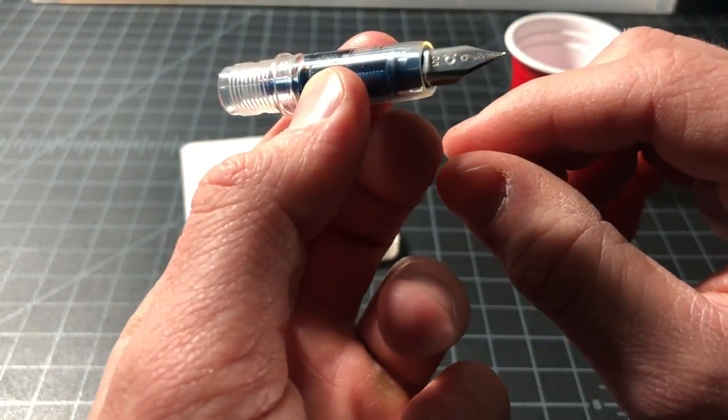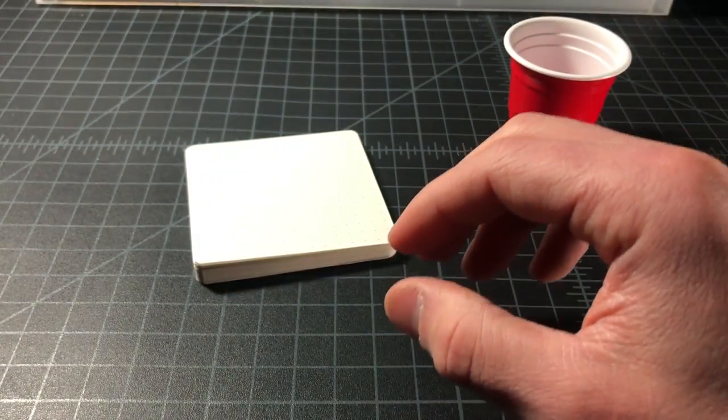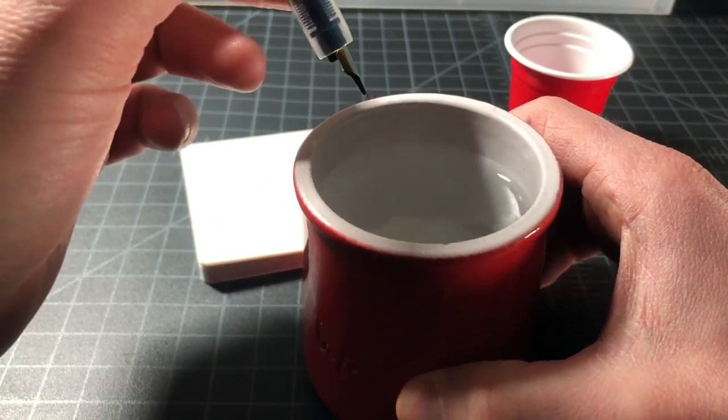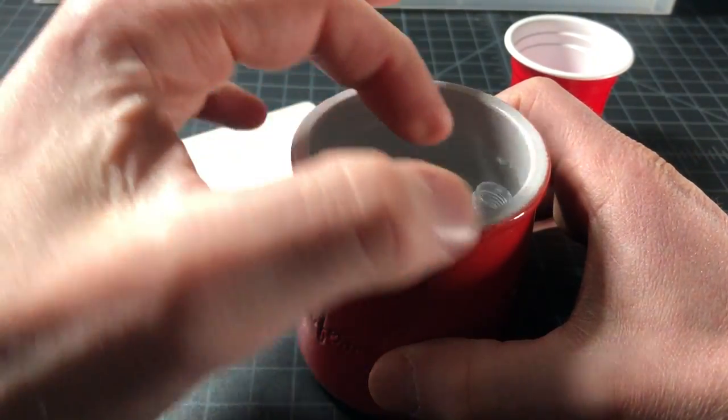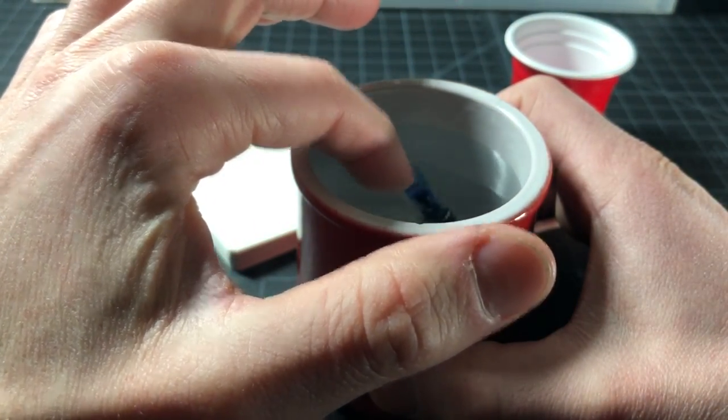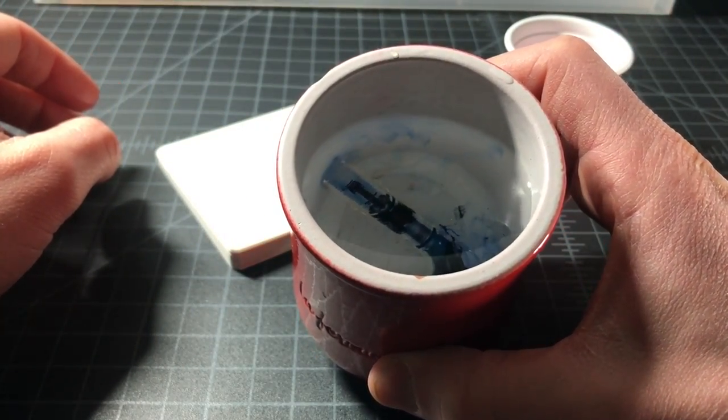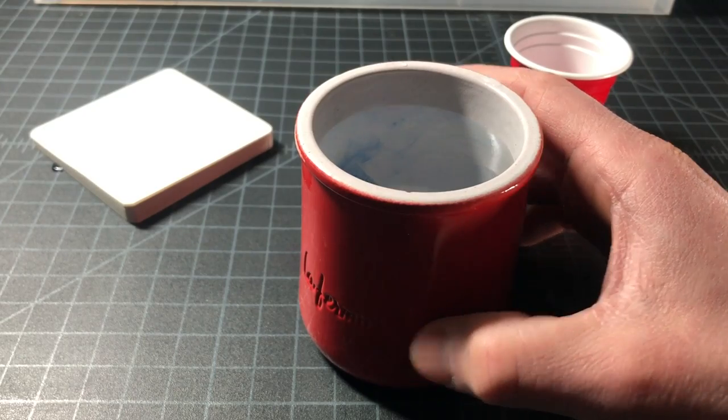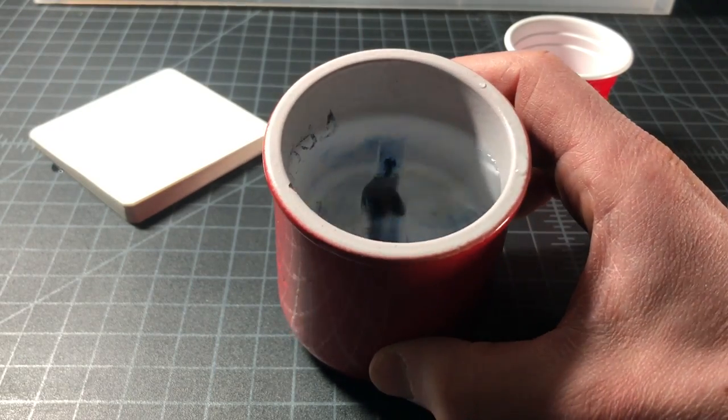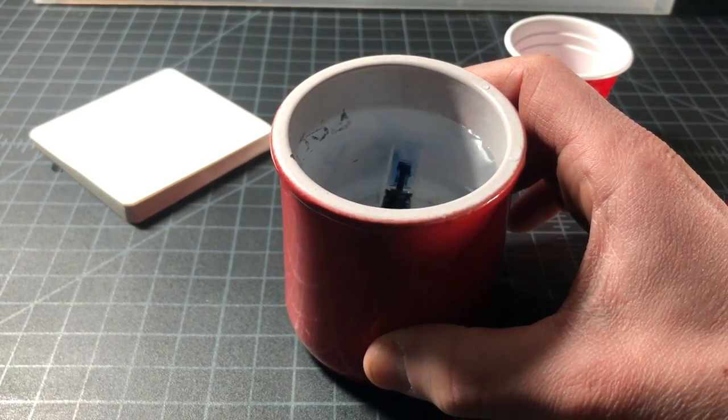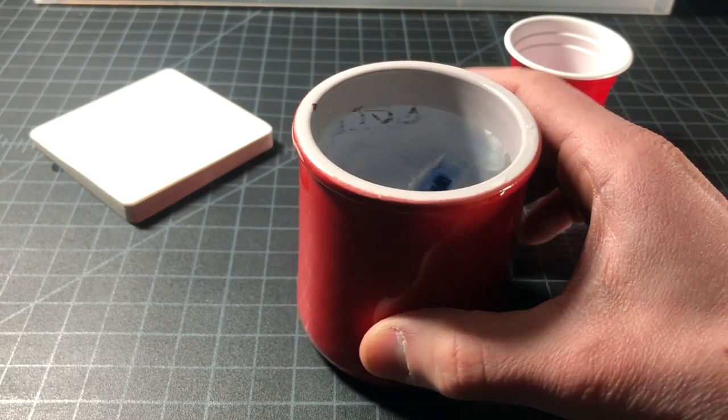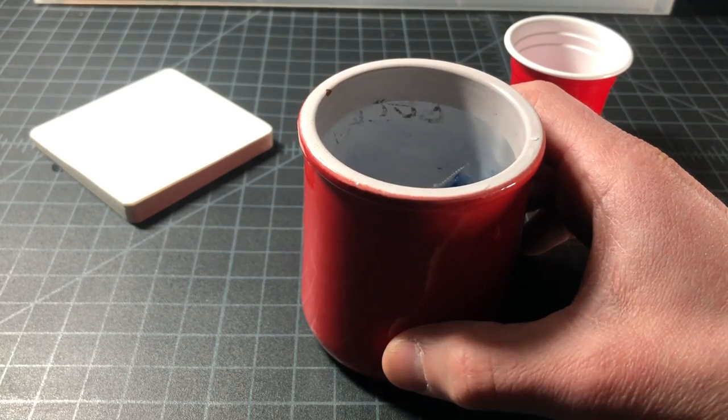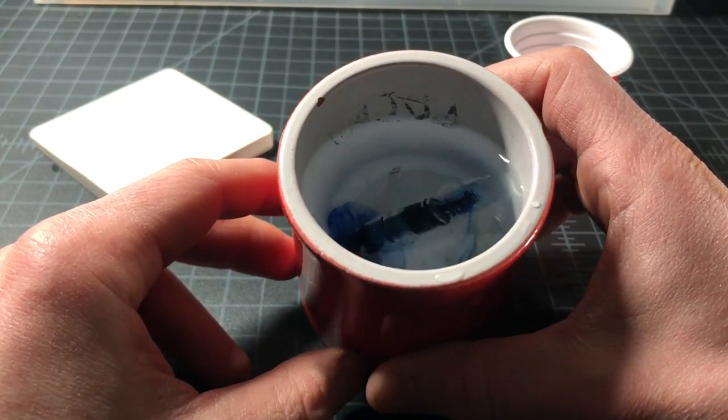So the first thing we want to do is give it a soak. This is warm water and we're going to put it right in here, in the warm water for about 24 hours, give or take. You could wash it first and run it under some cool or warm water depending on how sensitive you want to be. Don't use hot water.